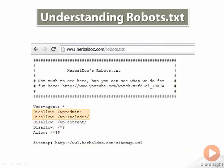Two of these folders — wp-admin and wp-includes — are administrative folders that if hacked could cause a lot of issues with HerbalDoc. The third folder is where all the site's images and uploads are. This folder is debatable on whether it should be crawled or not. If crawled, a lot of HerbalDoc's images will be found in the search engine's image search. This will send some traffic to HerbalDoc, but from past experience I've found that this traffic really doesn't convert, so I disallow the search bots from crawling this folder.